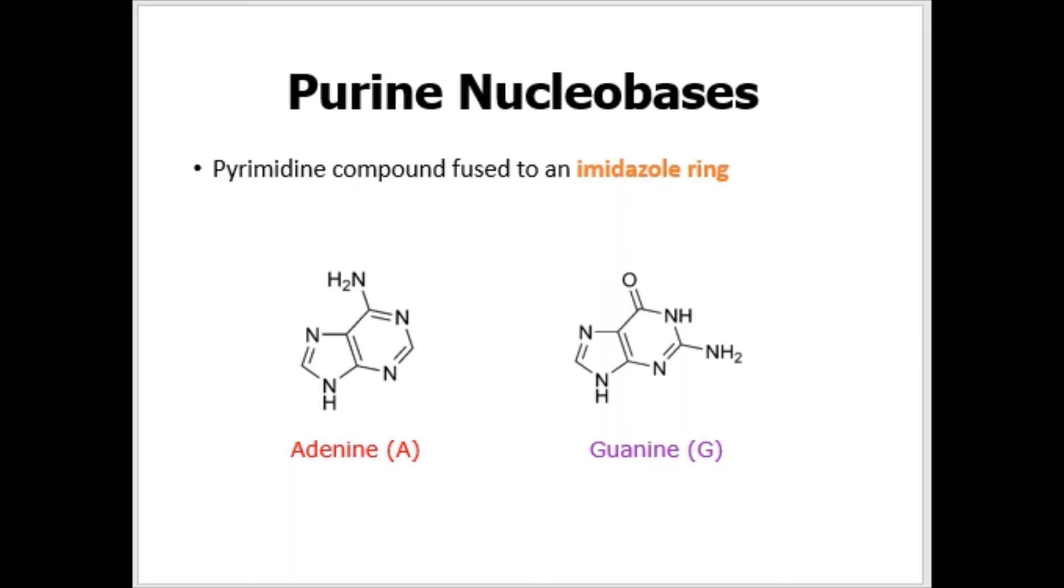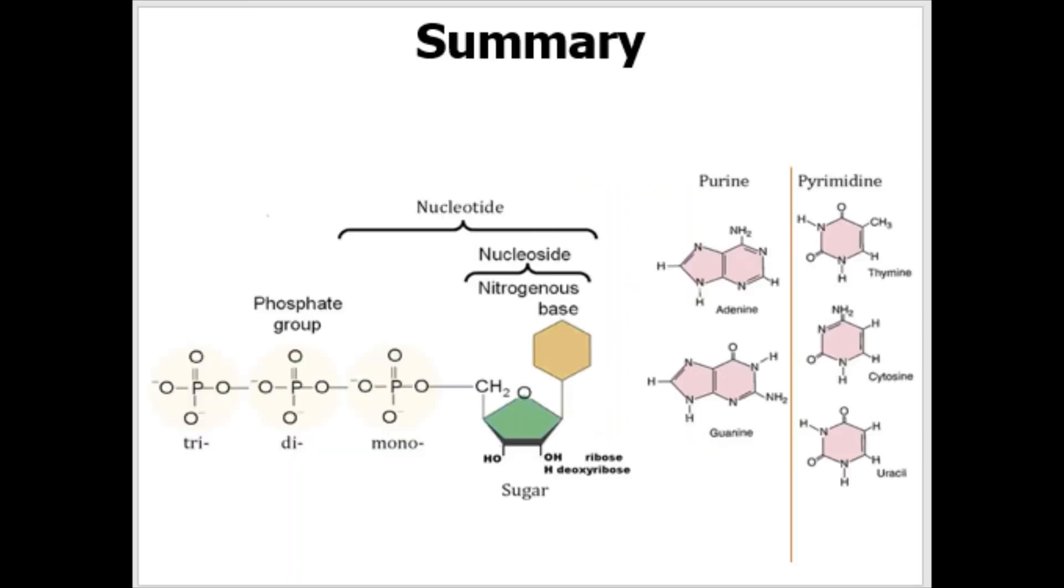Just to recap and summarize everything: nucleic acids are polynucleotides and the building blocks are nucleotides. It is a base which determines part of the name and we can have two types of these, purines or pyrimidines. The sugar can either be ribose or 2-deoxyribose, ribose corresponding to RNA and 2-deoxyribose corresponding to DNA. Finally, we can have one, two, or three phosphate groups. And that brings us to the end of this video. Thanks for watching.